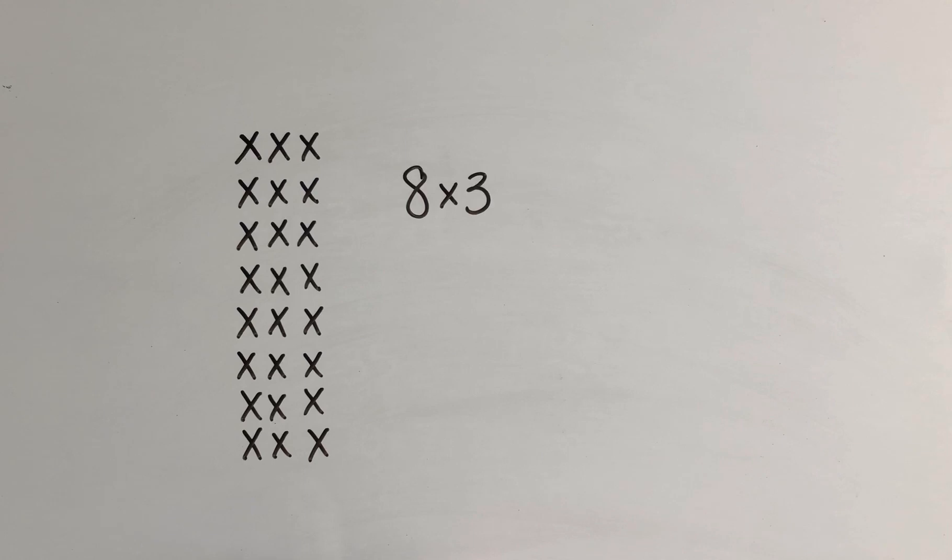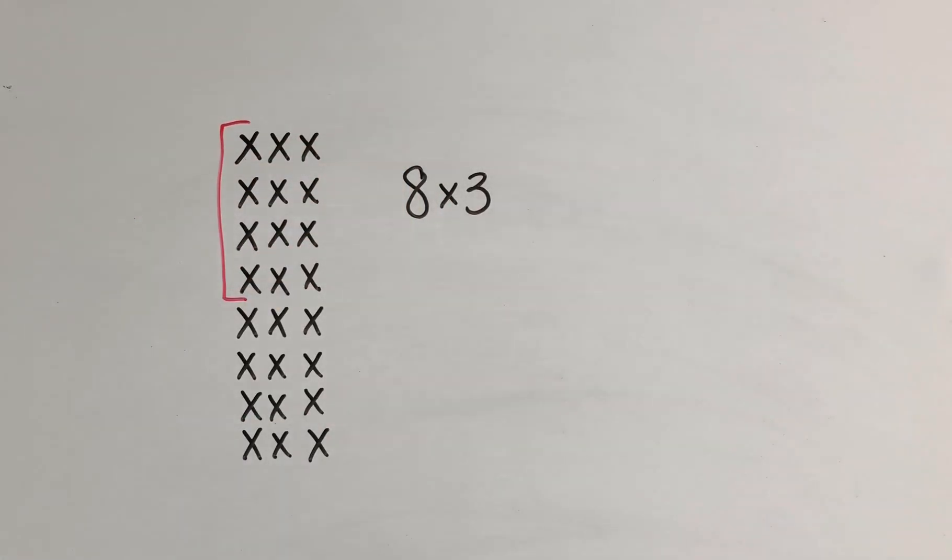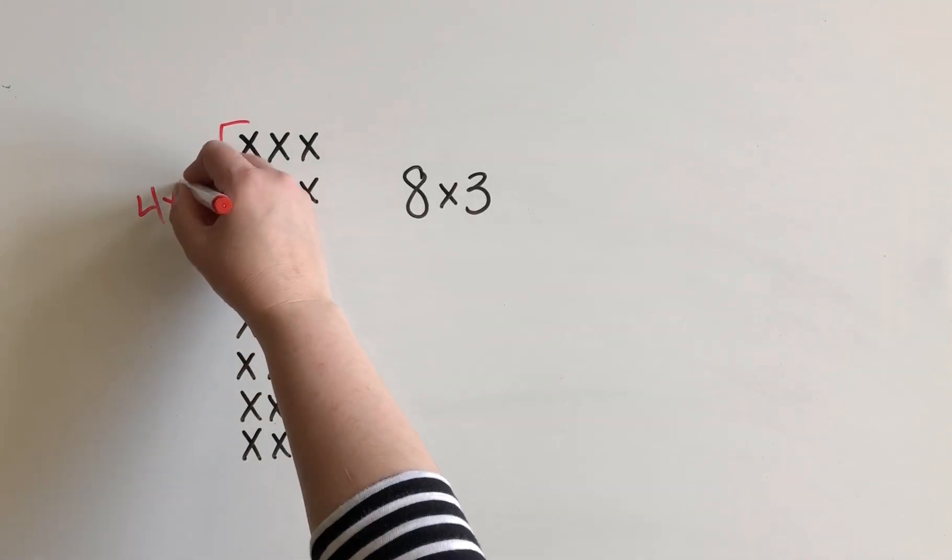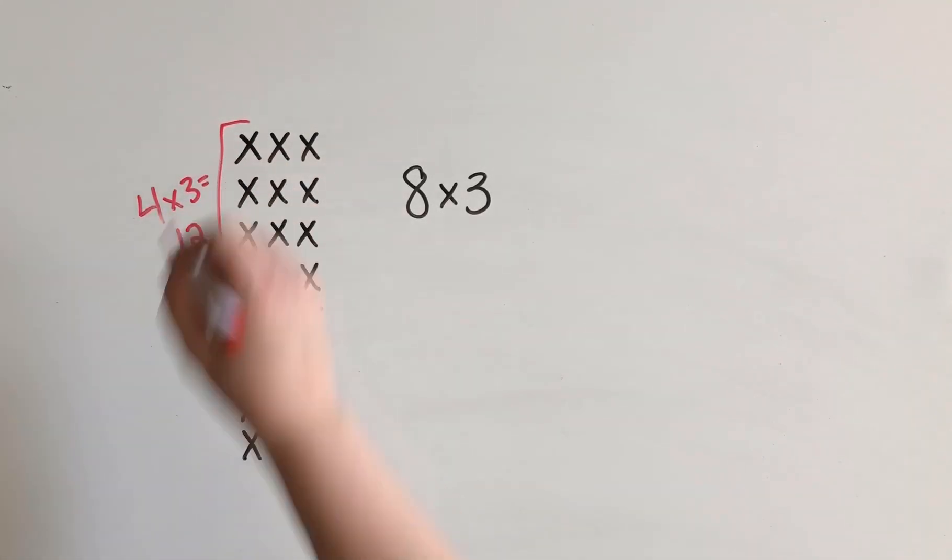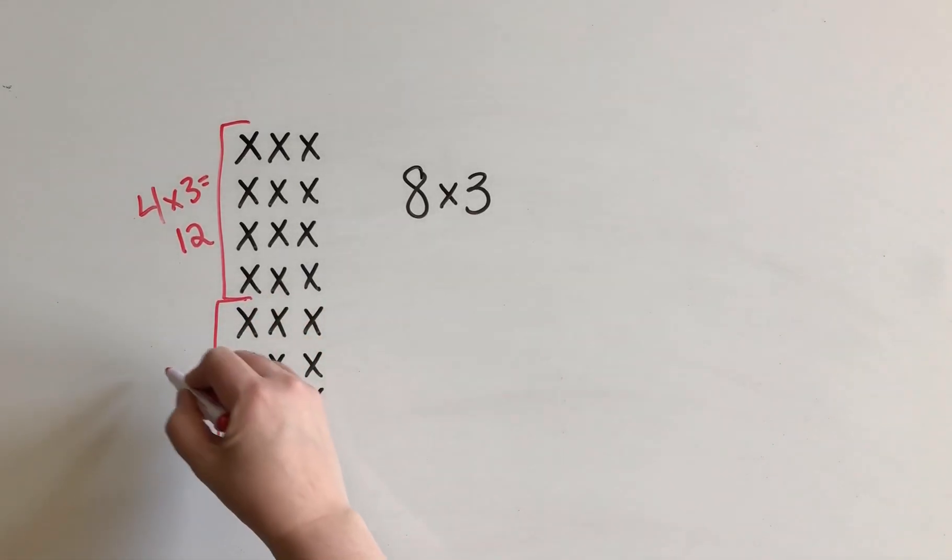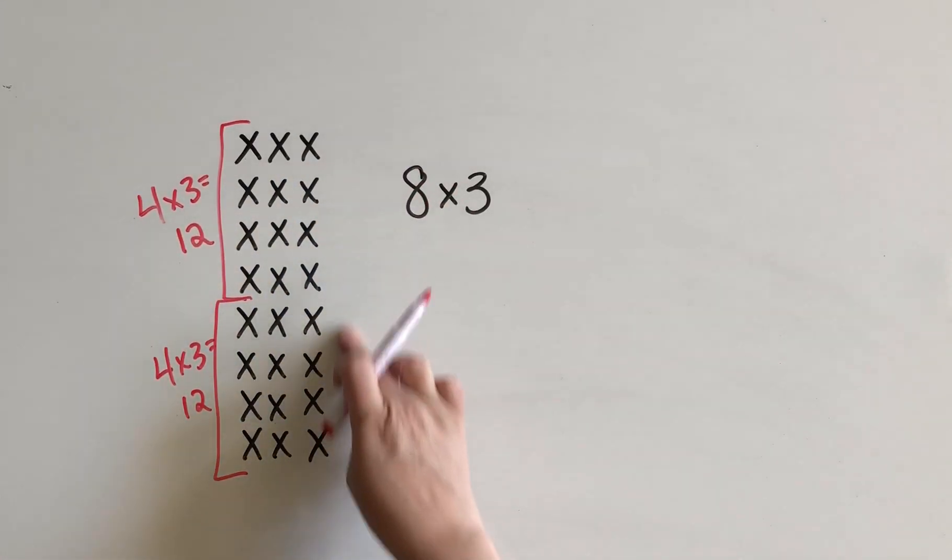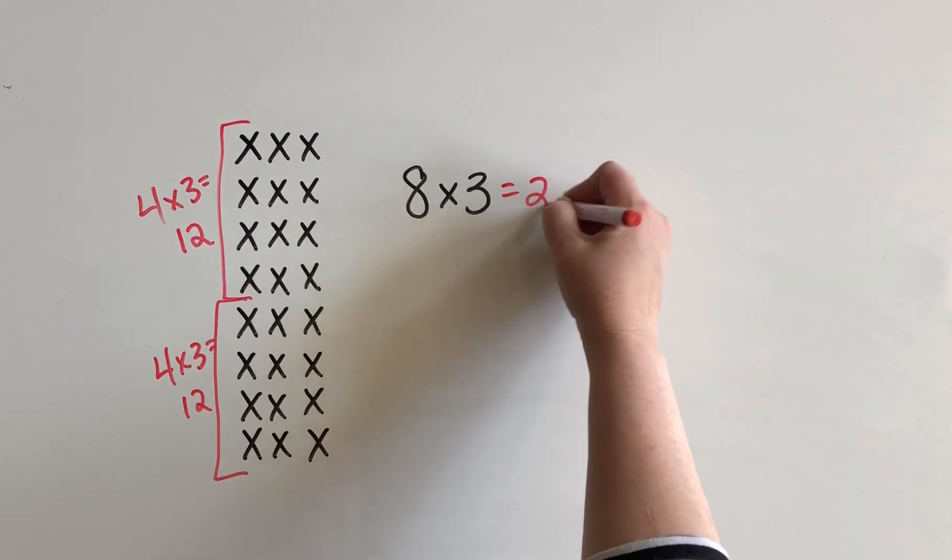Well, maybe I think to myself, okay, I know that 4 rows of 3 makes 12. And then I see another 4 rows of 3 and I know that that's 12. So if we have 12 in here and 12 down here, then we have 24 altogether. 24.